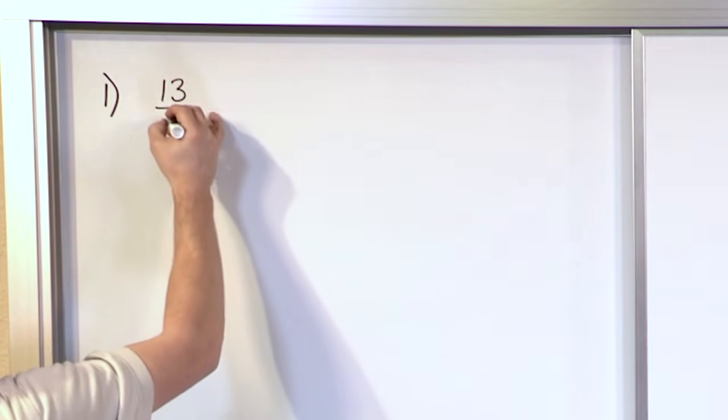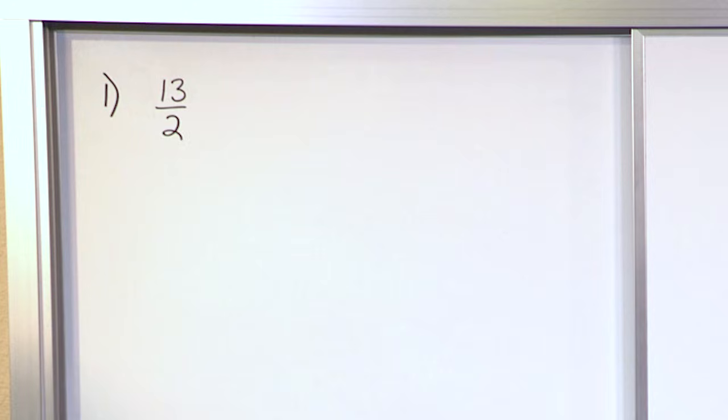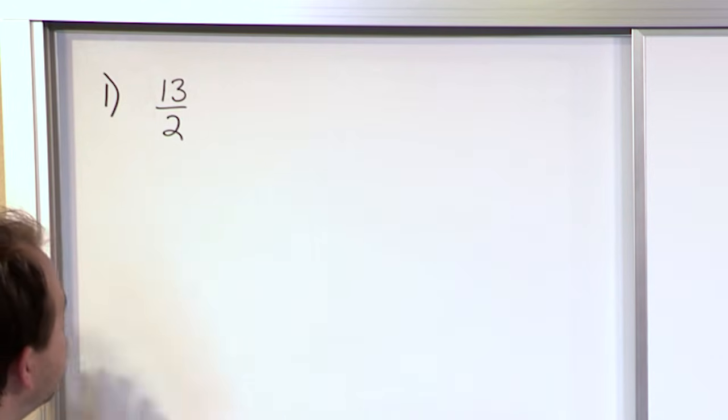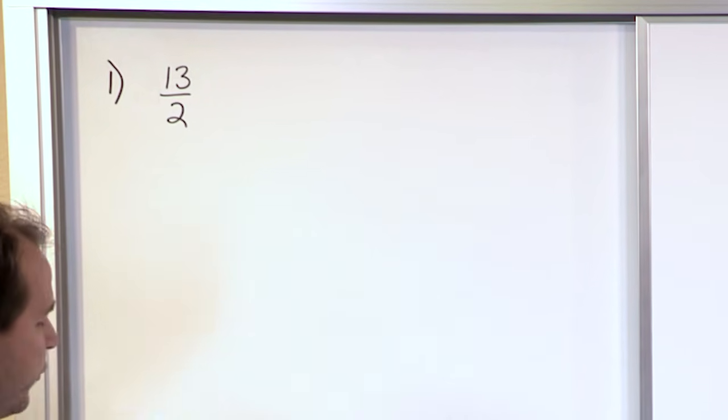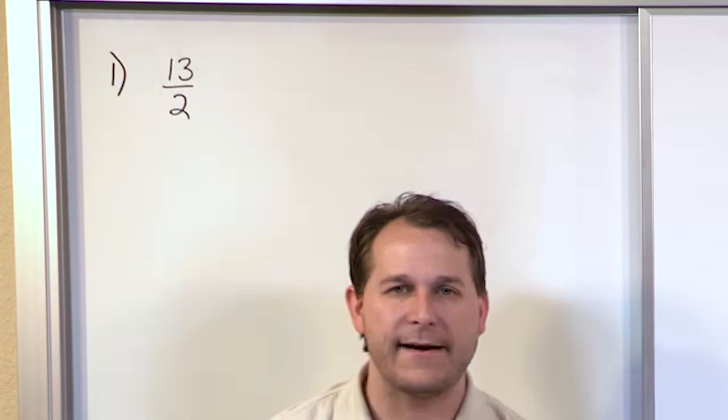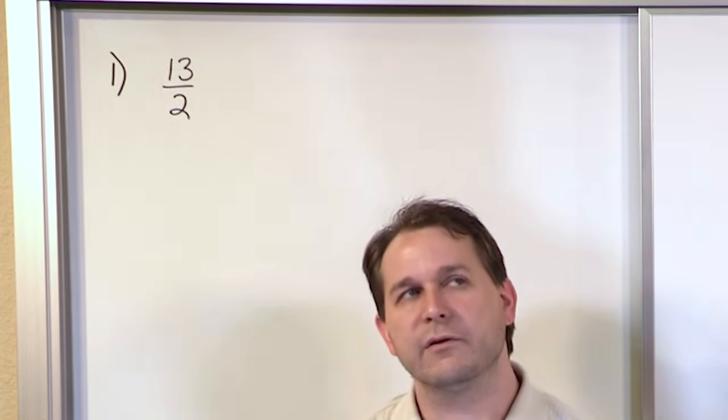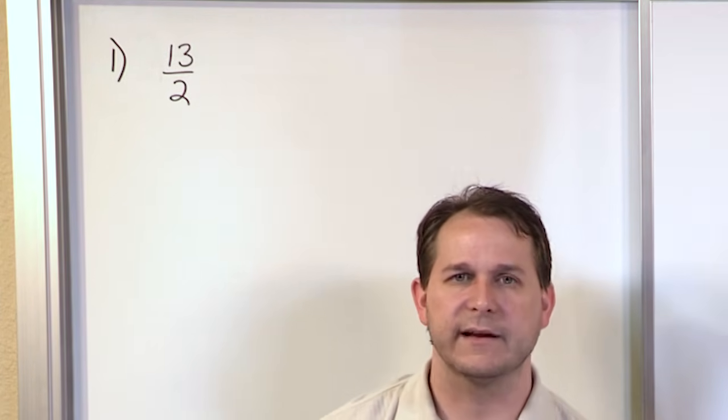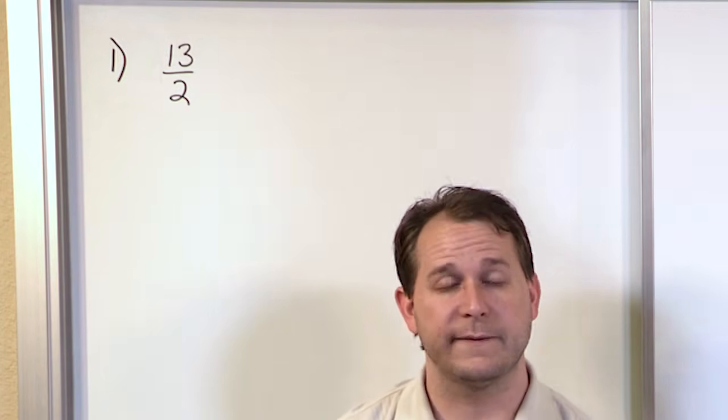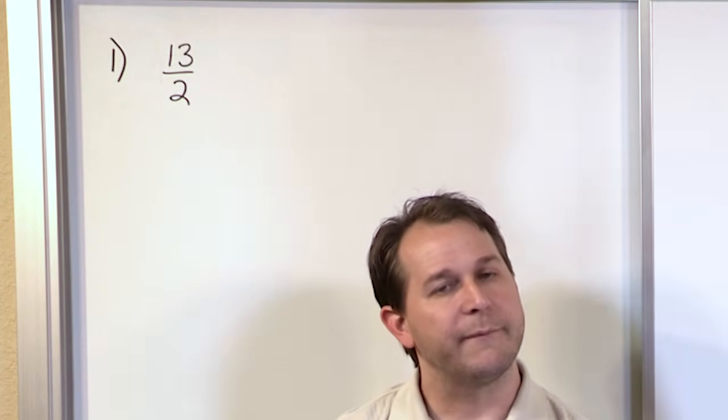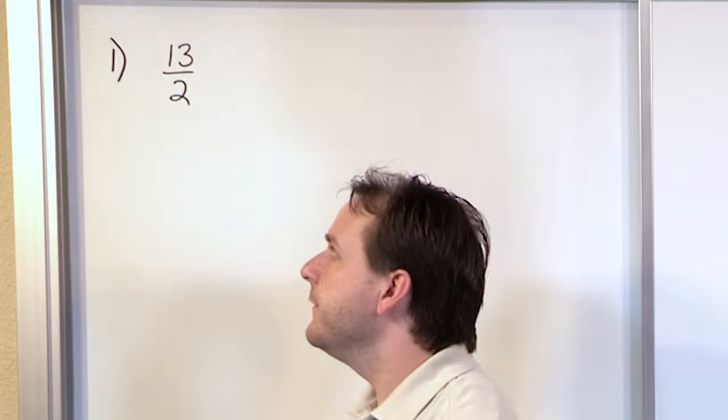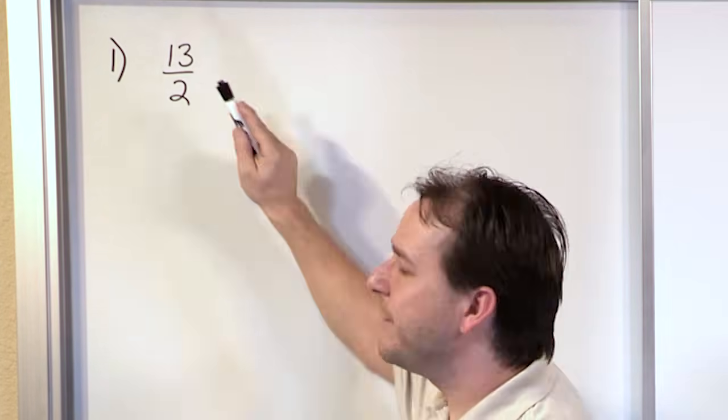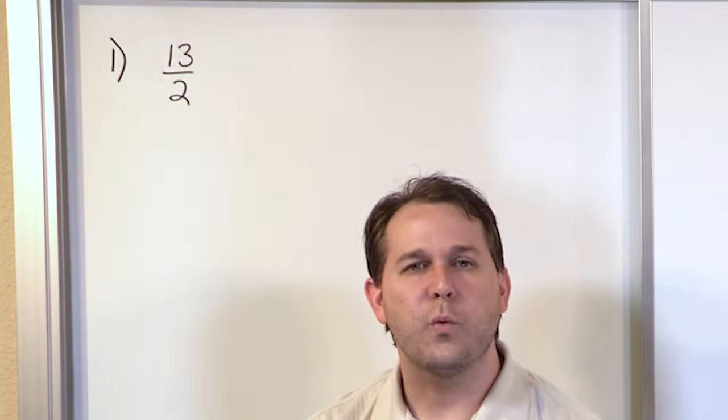Let's say I have the improper fraction 13 halves. This is an improper fraction because the numerator is bigger than the denominator. The way that you do this—something I haven't told you yet—is that fractions can also be thought of as division. So when we have 13 halves, you can think of it as 13 divided by 2.